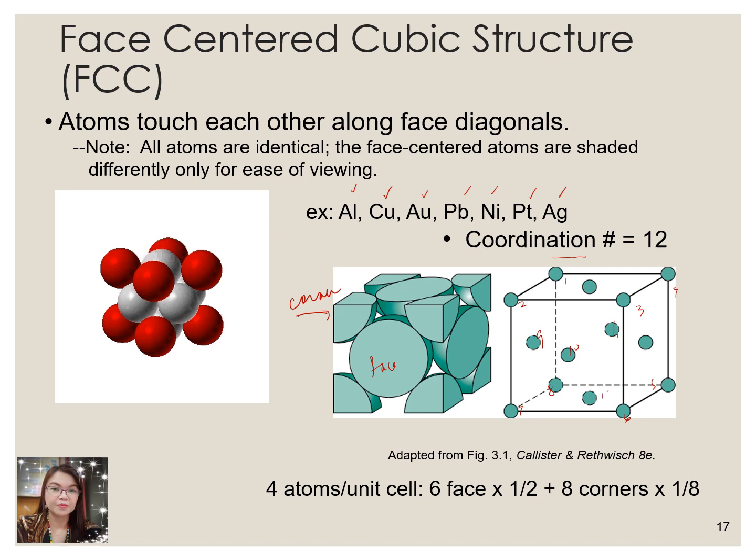And for the number of atoms per unit cell, you consider the 6 faces: 1, 2, 3, then 4, the bottom, 5 on this side, and at the back you have 6. Six faces times one-half plus the 8 corners of the cube, then you'll have 4 atoms per unit cell.